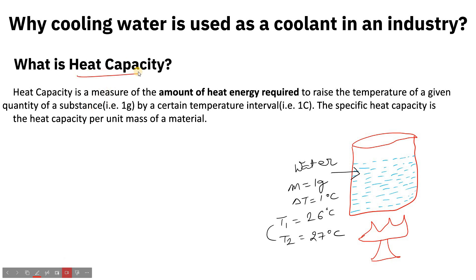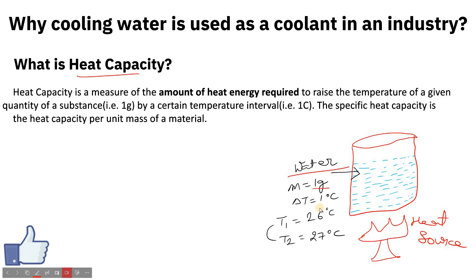So, what is heat capacity? Let's understand it with an example. Here I have water, and let's assume the mass of this water is one gram. A heat source is present, and I want to increase its temperature — say from 26 to 27 degrees Celsius, which is a change of one degree Celsius. The delta T, which is T2 minus T1, is one degree Celsius. How much heat energy is required to raise the temperature of one gram of water by one degree Celsius? That is called heat capacity.